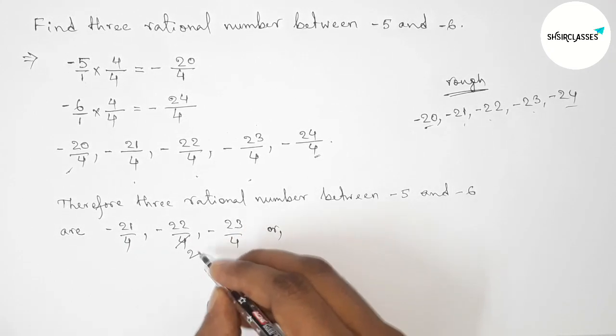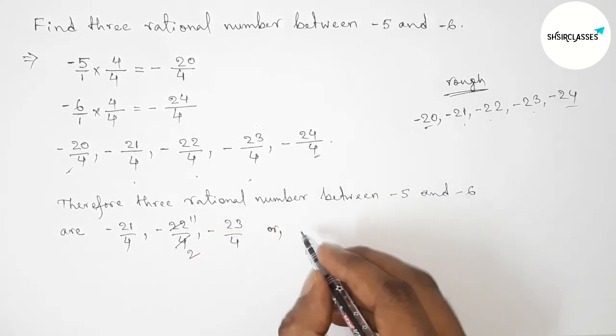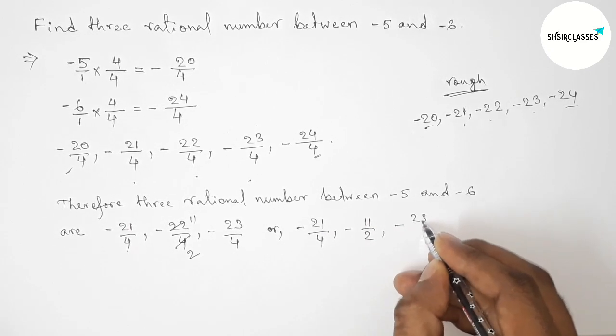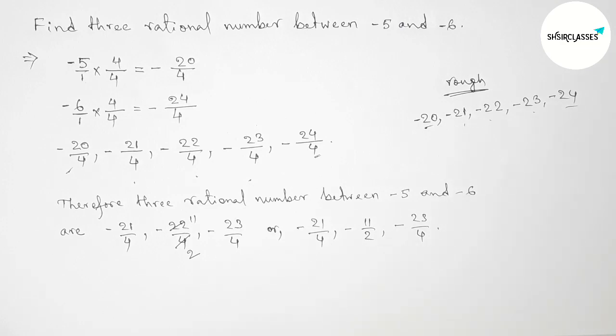Or if we divide both numbers by 2, then this is minus 11 by 2. So minus 21 by 4, minus 11 by 2, and minus 23 by 4. That's all.